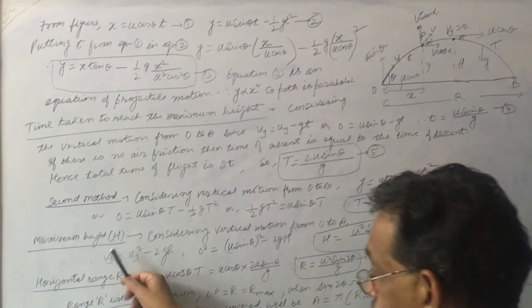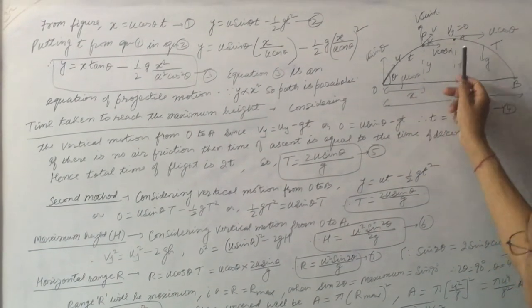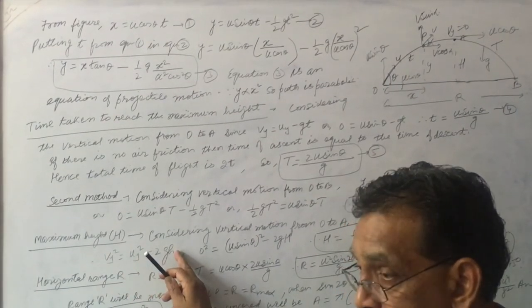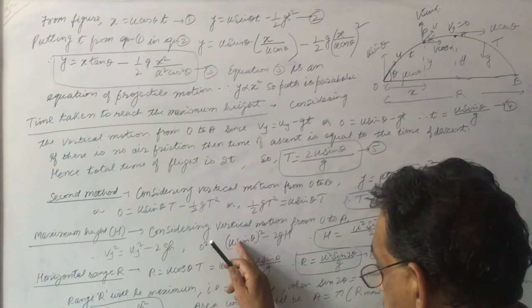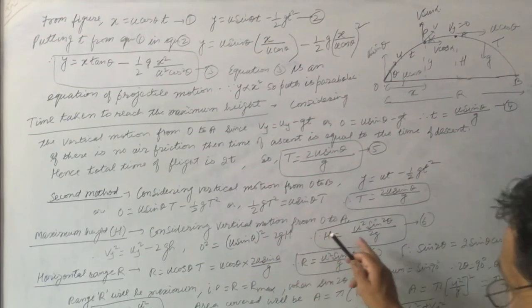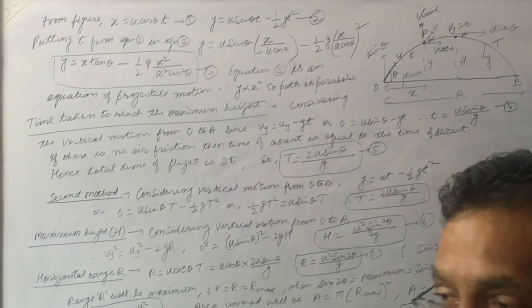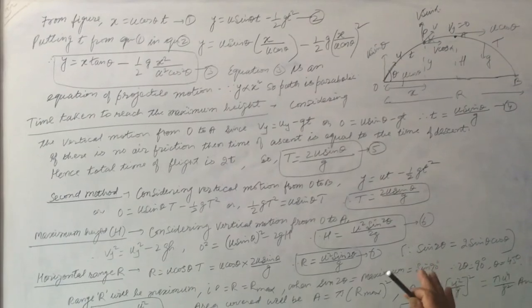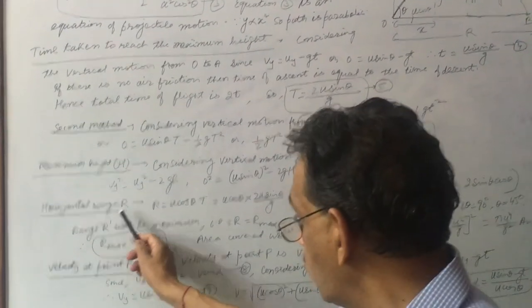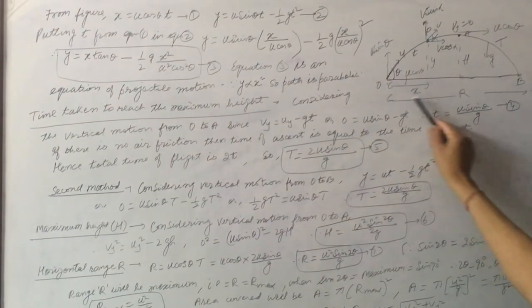Maximum height: considering vertical motion from O to A, using vy² = uy² − 2gH, and at maximum height vy = 0, we get H = u² sin²θ / (2g). This is the standard formula for maximum height.